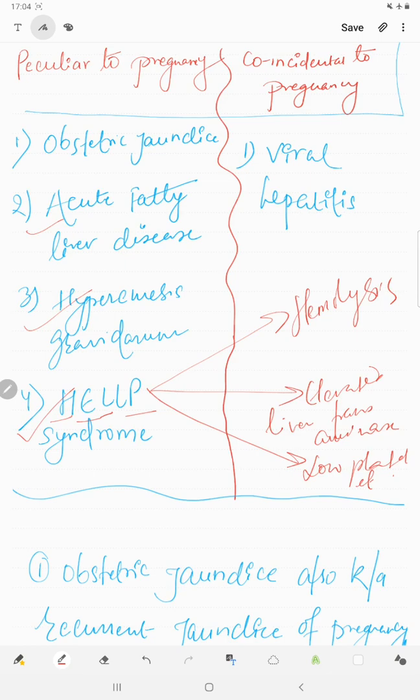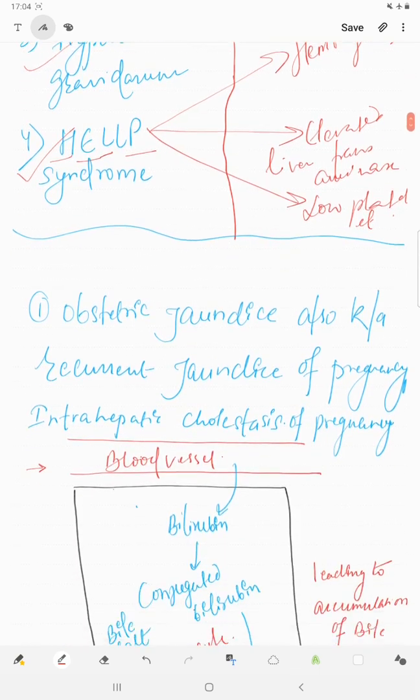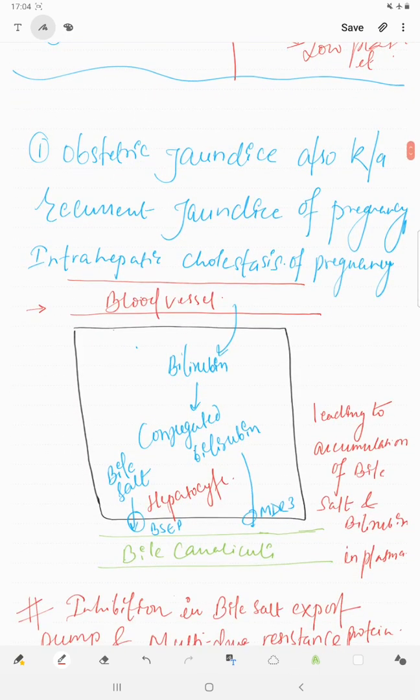In this video we will be mainly talking on obstetric jaundice, which is also known as recurrent jaundice of pregnancy or intrahepatic cholestasis of pregnancy.